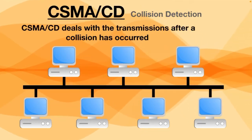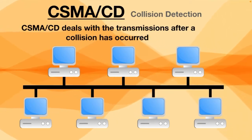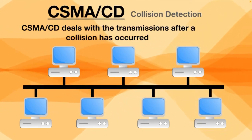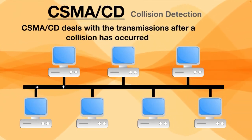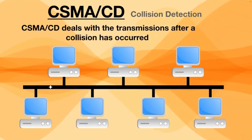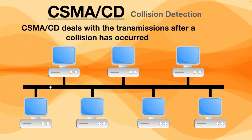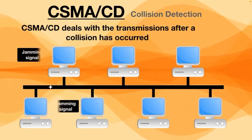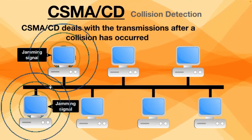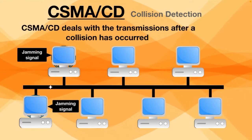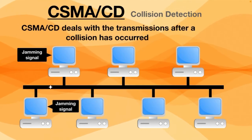But what if two devices both see that it is safe to start sending data at the same time? Problems could occur — if two devices send data simultaneously they could cause a collision. When this happens, the two devices that caused the collision send out a jamming signal, telling all other devices to hold off on sending data and wait for a random amount of time before transmitting again.